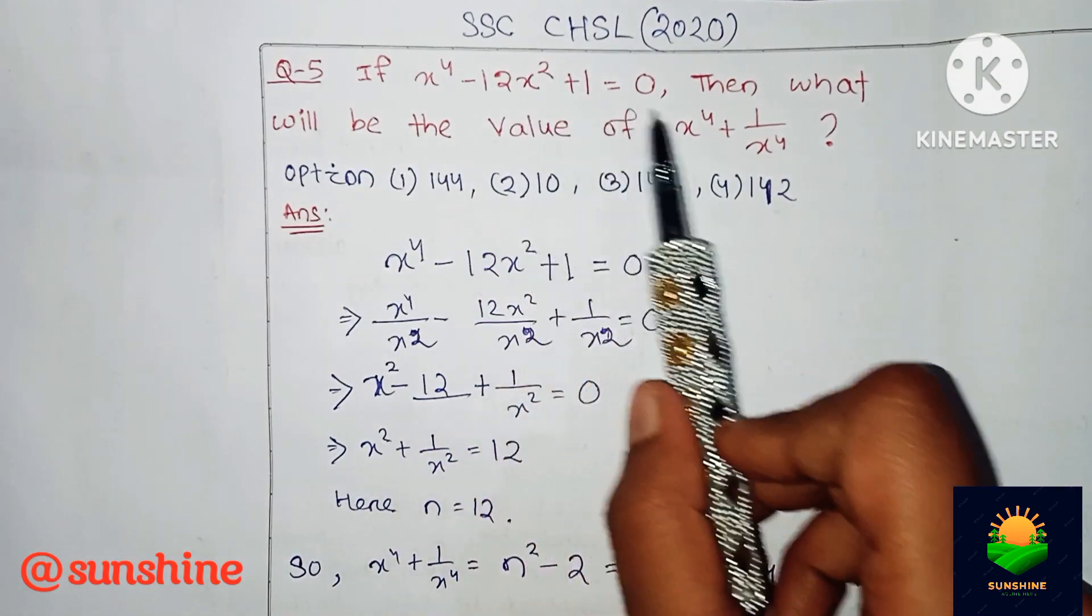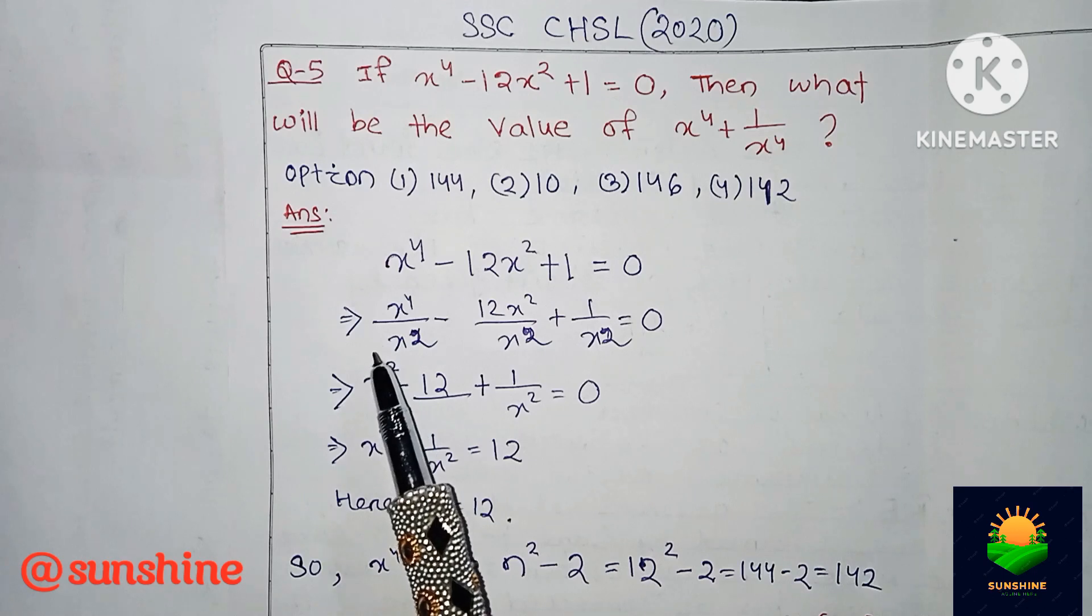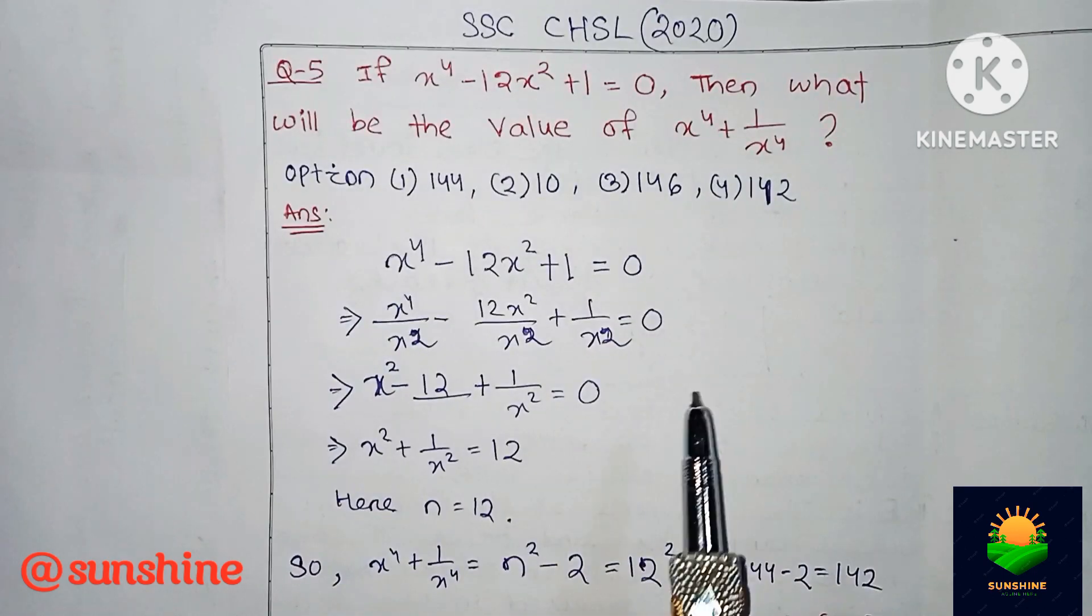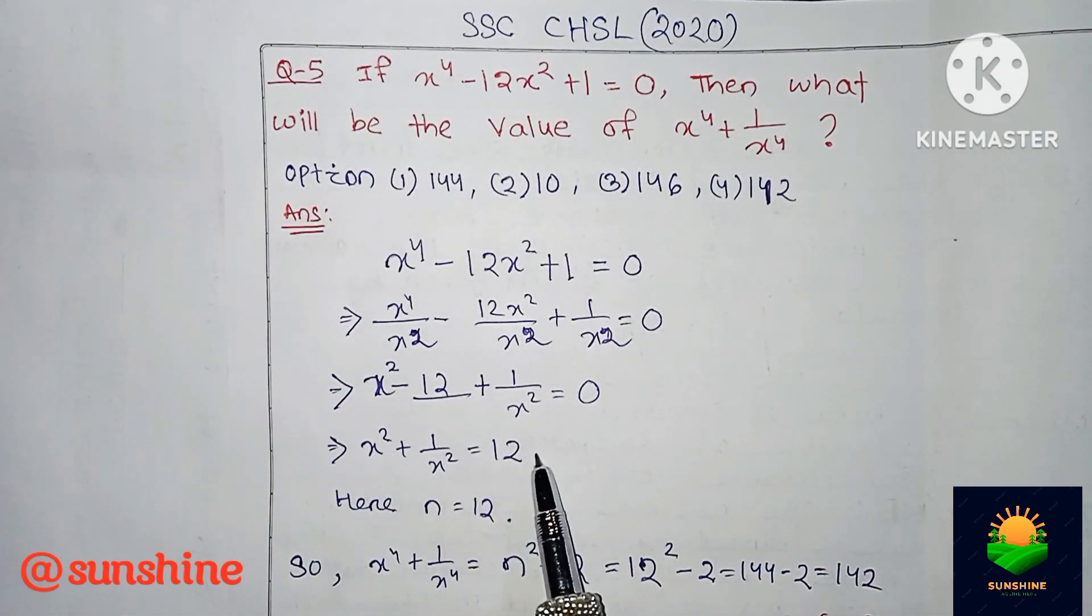From x to the fourth minus 12 x square plus 1 equal to 0, we will get x square plus 1 by x square value 12. So here n equal to 12.